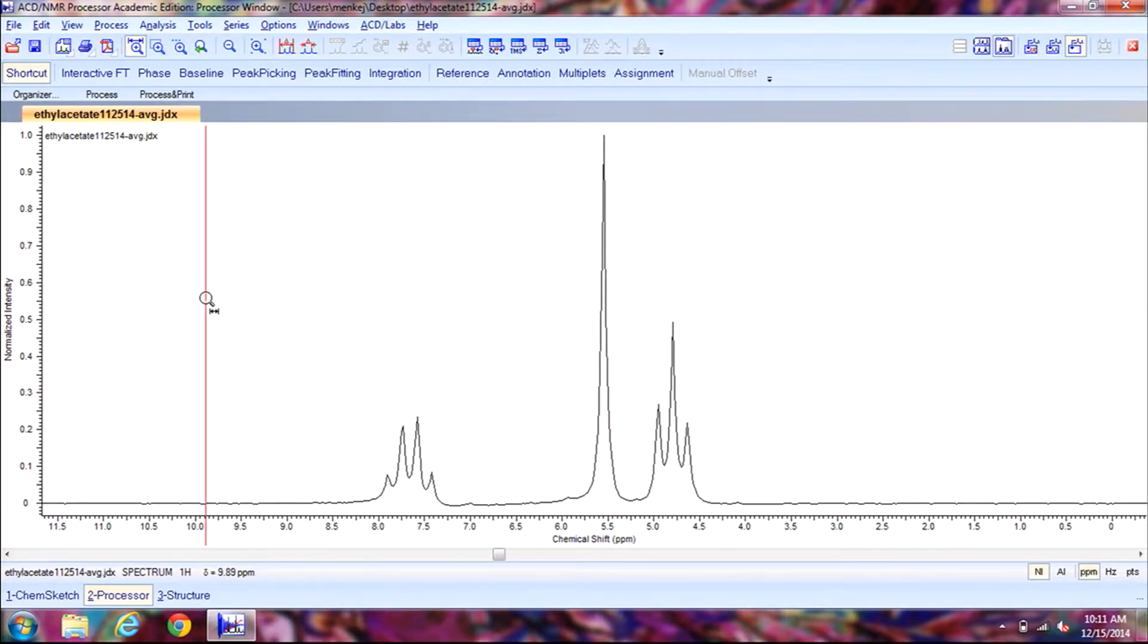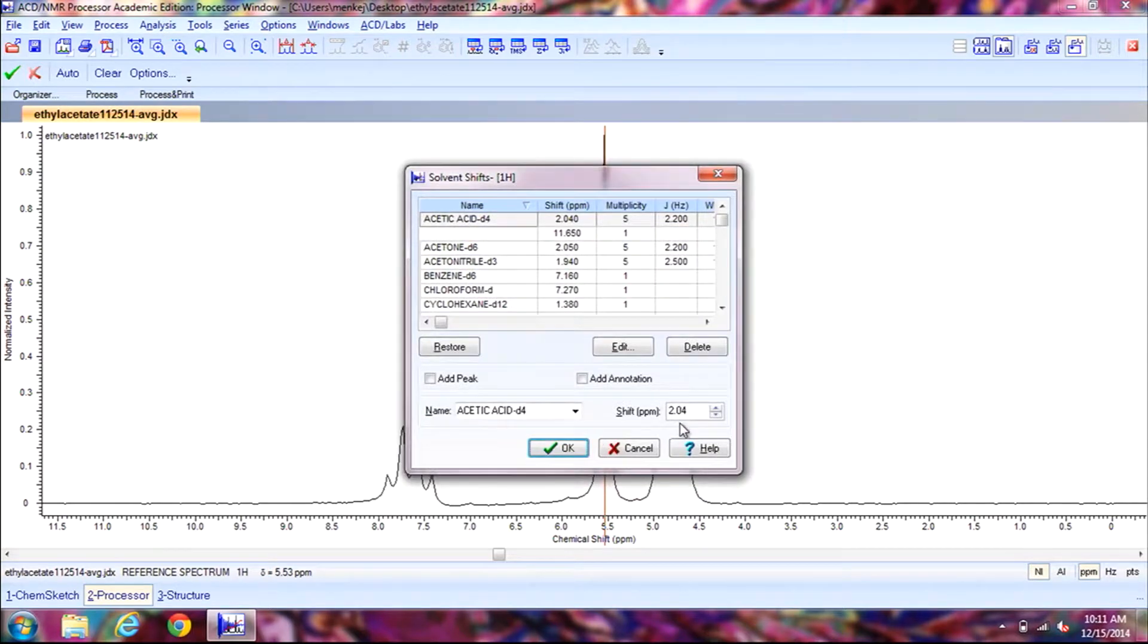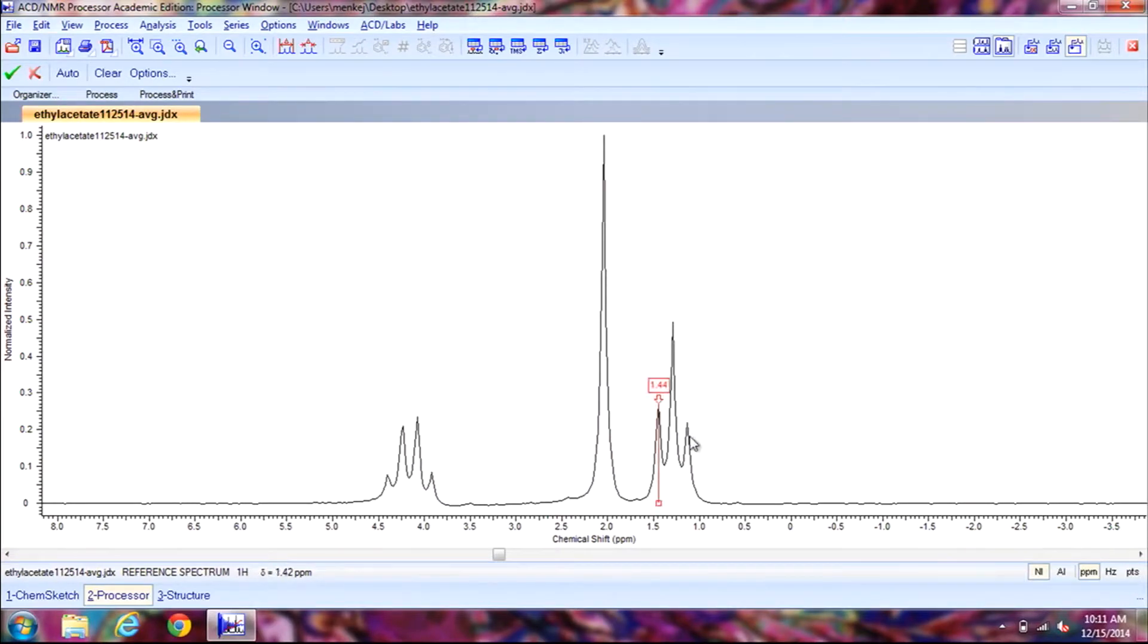And now we're going to reference our spectrum. So we're going to click on reference. There should be a known peak value that will be provided to you by your instructor. So we're going to reference our peaks by using your mouse to click on the peak that you want to reference. For example I know that the middle peak should have a value set to 2.04 ppm. So I'll enter that value here and then click on OK, and that shifted and referenced all the other spectrums for me. Now I will click on the green check mark to exit out.